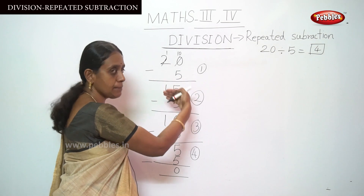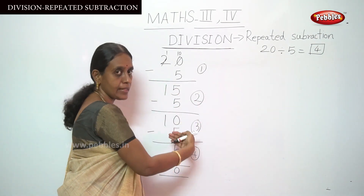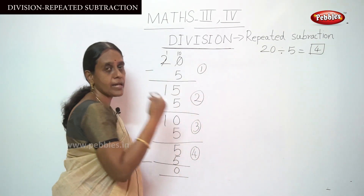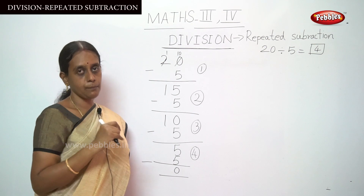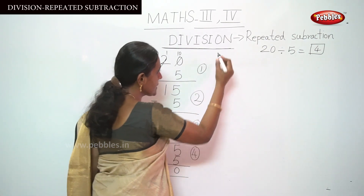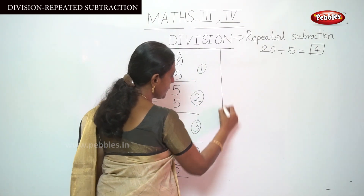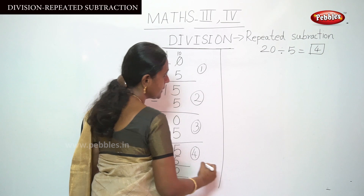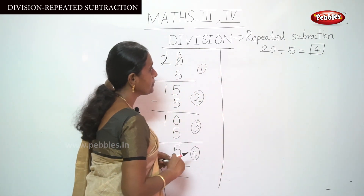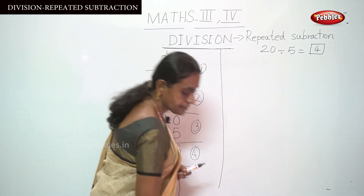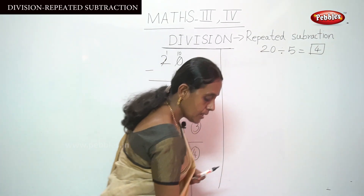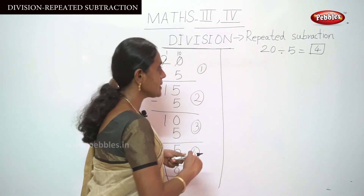This is the method to find out the quotient by using repeated subtraction until the answer is 0. You have to subtract again and again with the same divisor number. I am going to explain one more example for you, children.